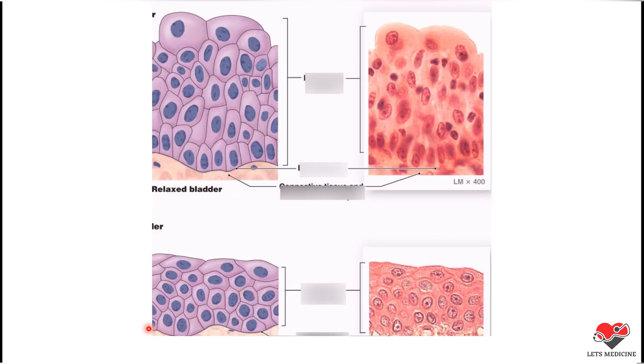So we have the two forms of Transitional Epithelium: the relaxed form and the stretched form. I hope you can understand the concept of Transitional Epithelium. Thank you.